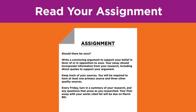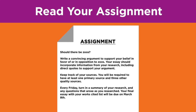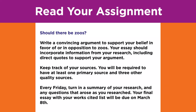The first step is to read your assignment sheet carefully. Here's an example: Should there be zoos? Write a convincing argument to support your belief in favor of, or in opposition to, zoos. Your essay should incorporate information from your research, including direct quotes, to support your argument. Keep track of your sources. You will be required to have at least one primary source and three other quality sources. Every Friday, turn in a summary of your research and any questions that arose as you researched. Your final essay with your Works Cited list will be due on March 8th.